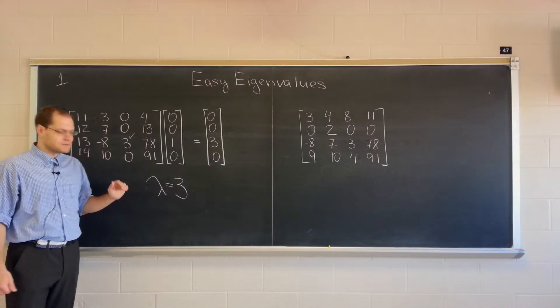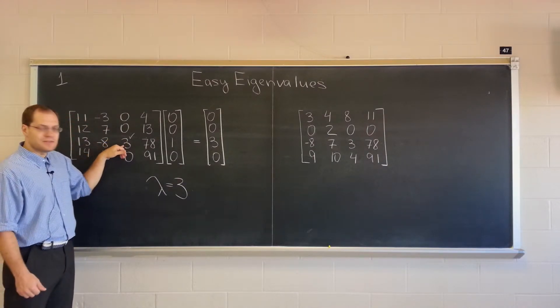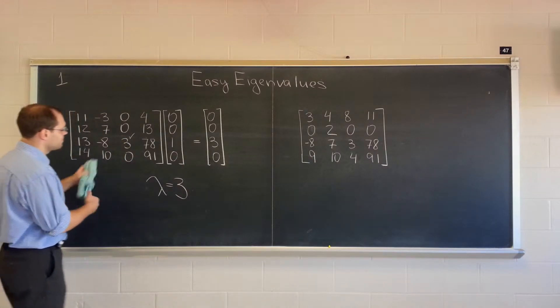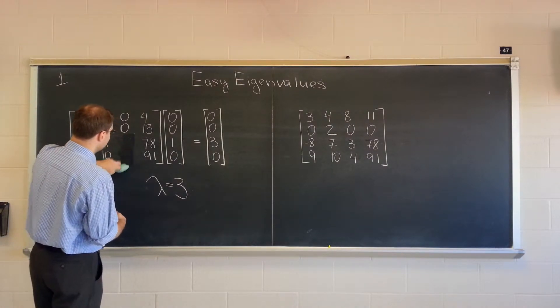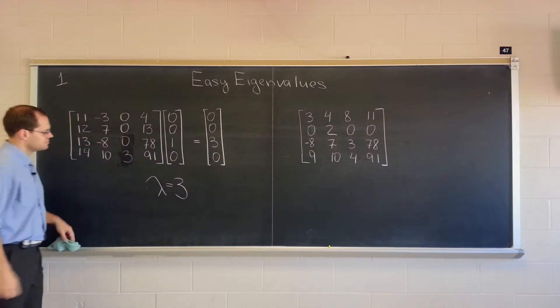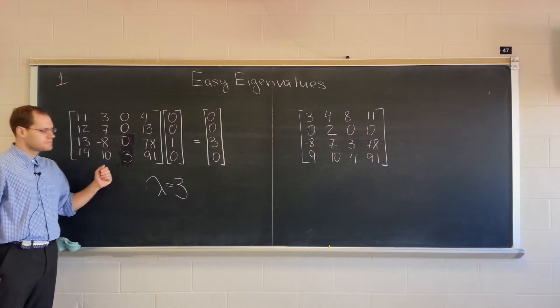Why is it important that this non-zero entry is on the diagonal? Well, let's consider a situation where it's not. Suppose that this three is not in this position, but in this position. Is it an eigenvalue? Let's take a look.